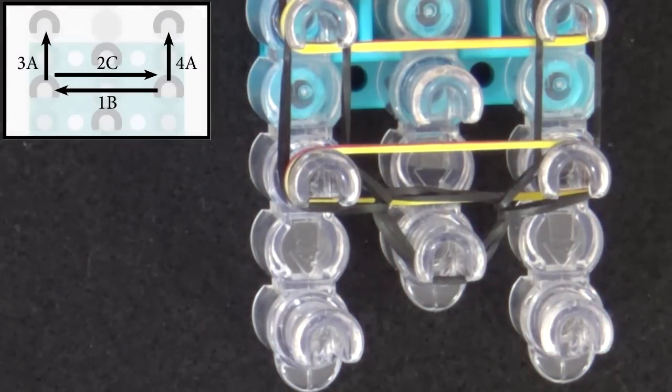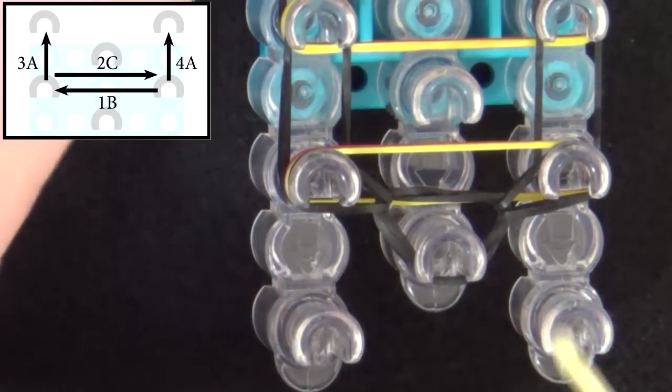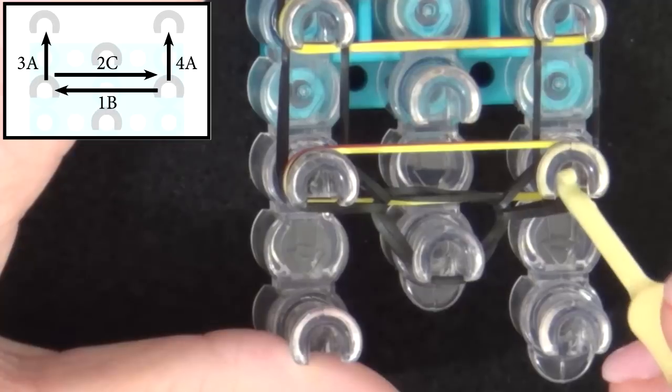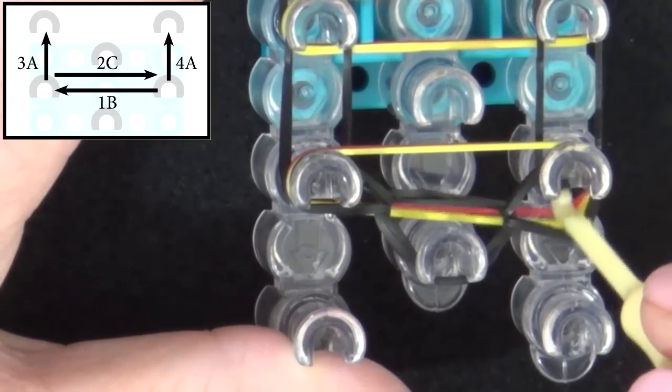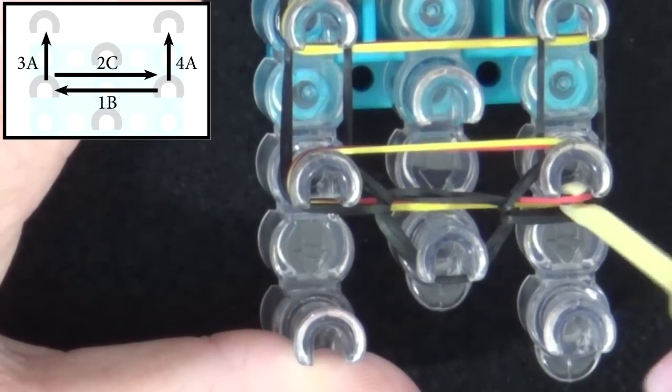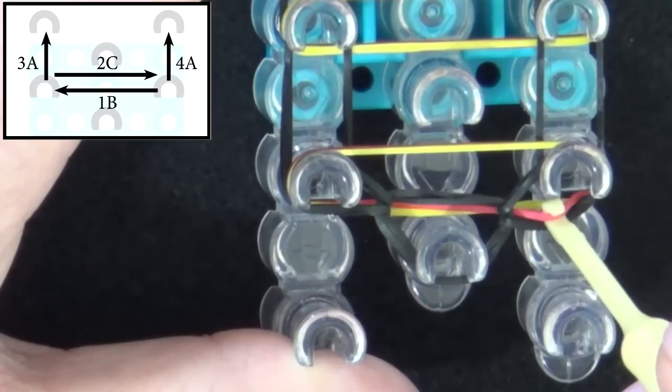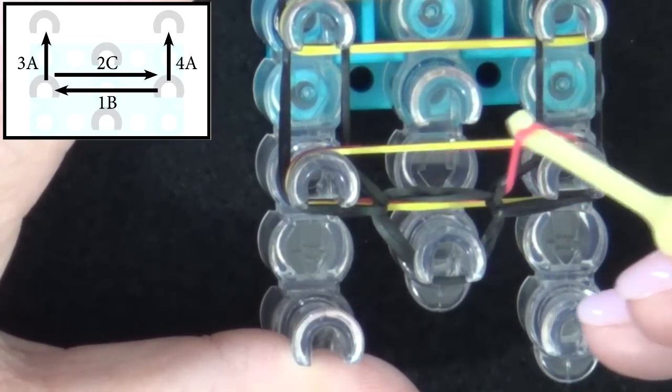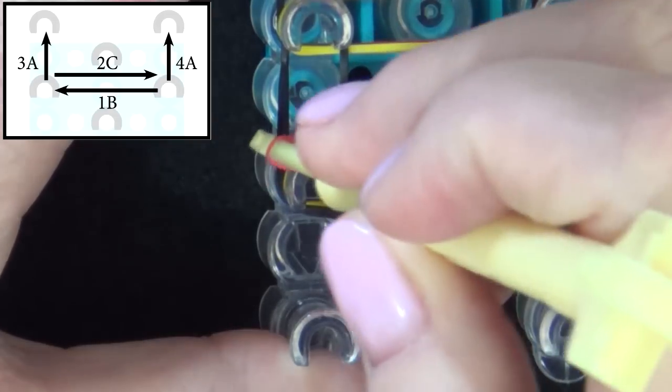Now we'll be starting the looping pattern one through four. We'll start with the B band, so we pull these bands back, slide our hook in, and get the B band on our hook, and we pull that to the left side.